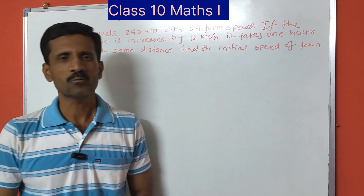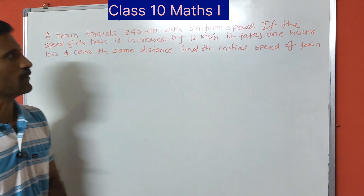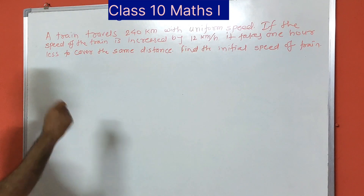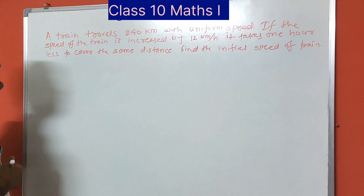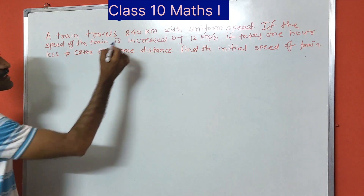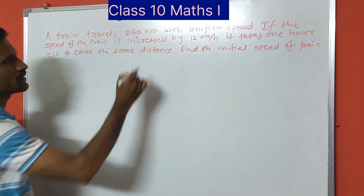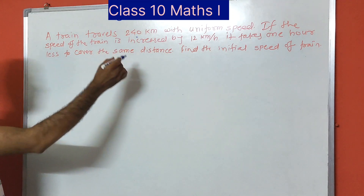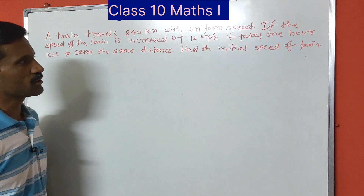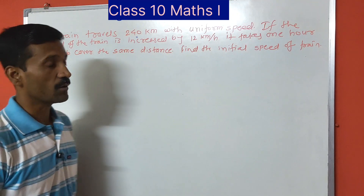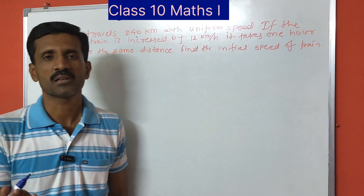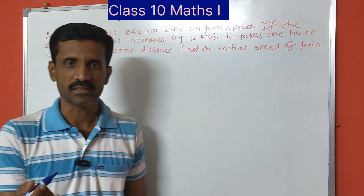So, there is one train which is travelling with uniform speed, and the distance is 240 km. If the speed of the train is increased by 12 km per hour, that is the new speed is 12 km per hour more than the original.